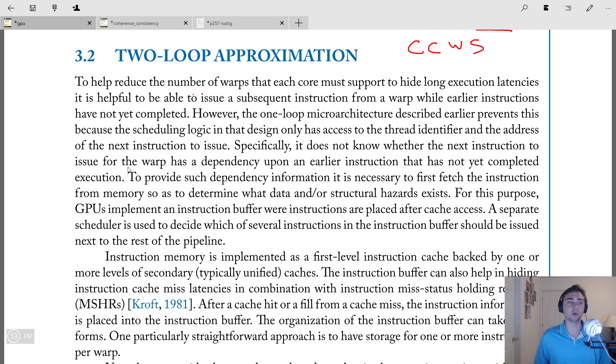So we're still talking about the cores and the architecture for the cores, and last time when we were talking about the one-loop approximation, we were considering the architecture in terms of what you would expect just looking at the programmers model. You look at a warp, a warp will have an instruction, and then we'll go ahead and execute that instruction.